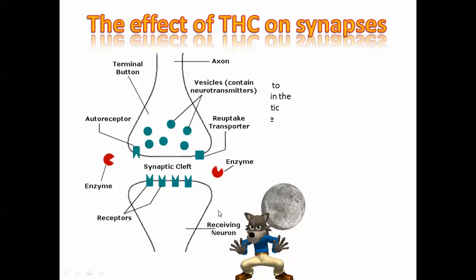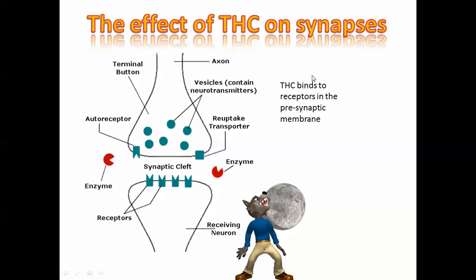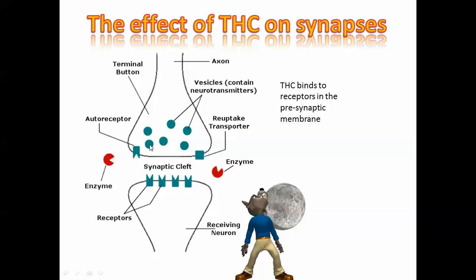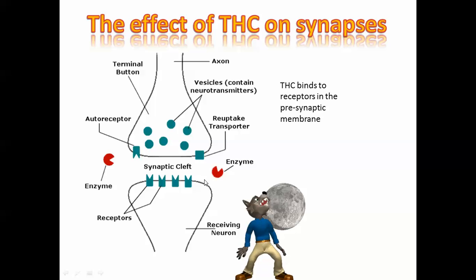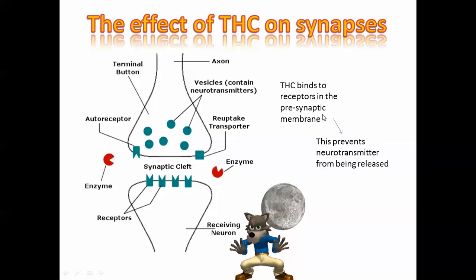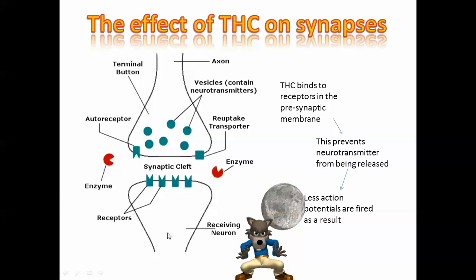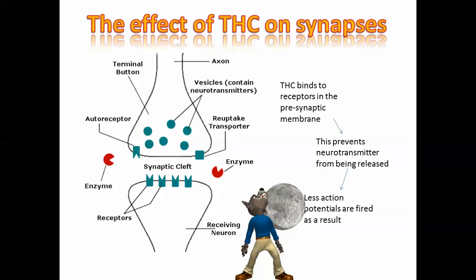Now let's look at THC. THC does something different. What THC does is bind to receptors on the presynaptic neuron and simply prevents vesicles from reaching the membrane. As a result, if something blocks the release of these neurotransmitters, there will be no neurotransmitters going across — or it'll be greatly reduced — and you end up with less firing overall. THC binds to receptors in the presynaptic membrane, preventing neurotransmitters from being released, so fewer action potentials are fired. That's perceived as a slower response — it's well documented that people smoking marijuana have lower reaction times, so you shouldn't be driving or doing anything requiring you to be very alert.